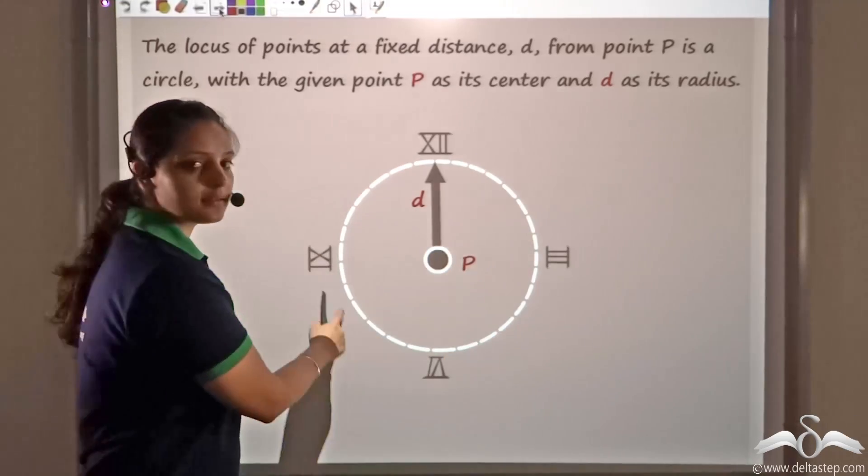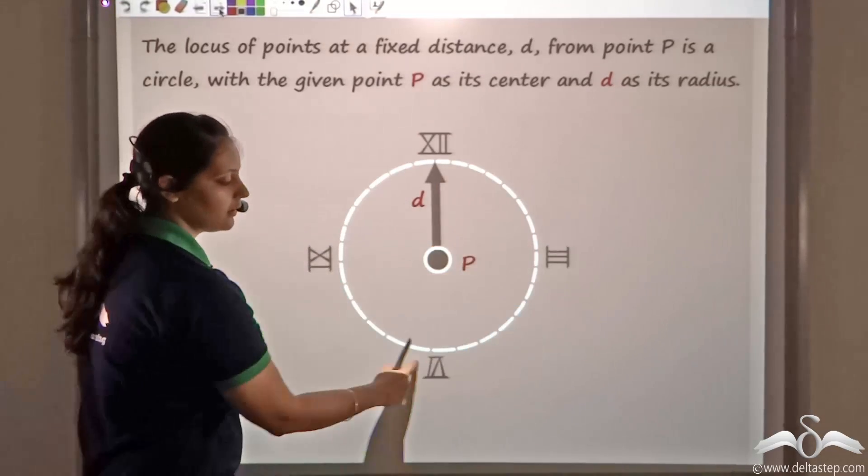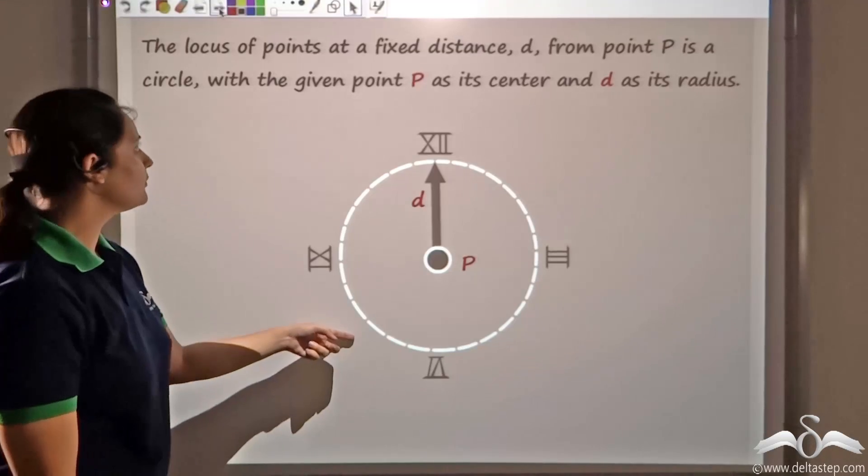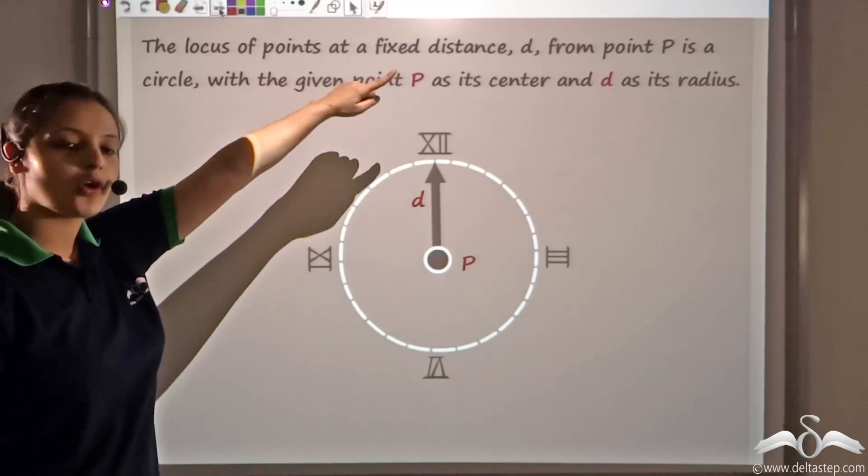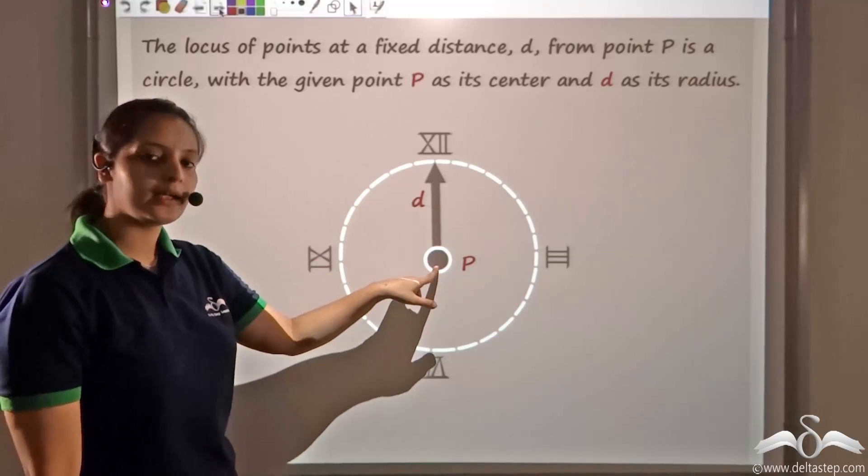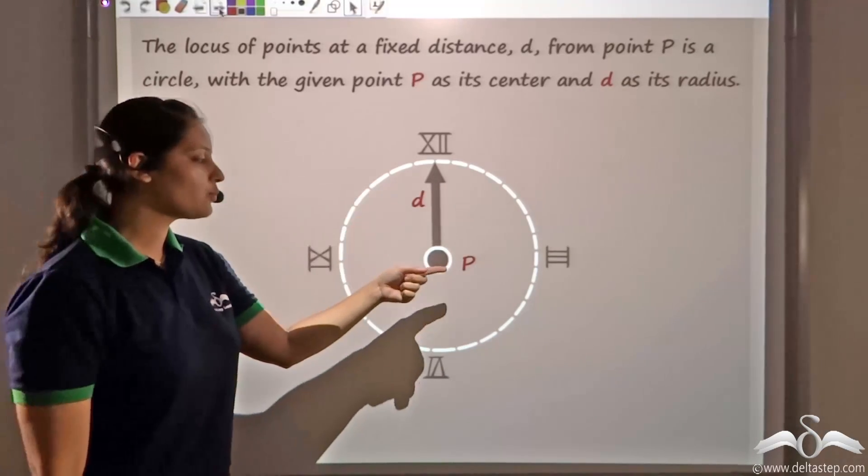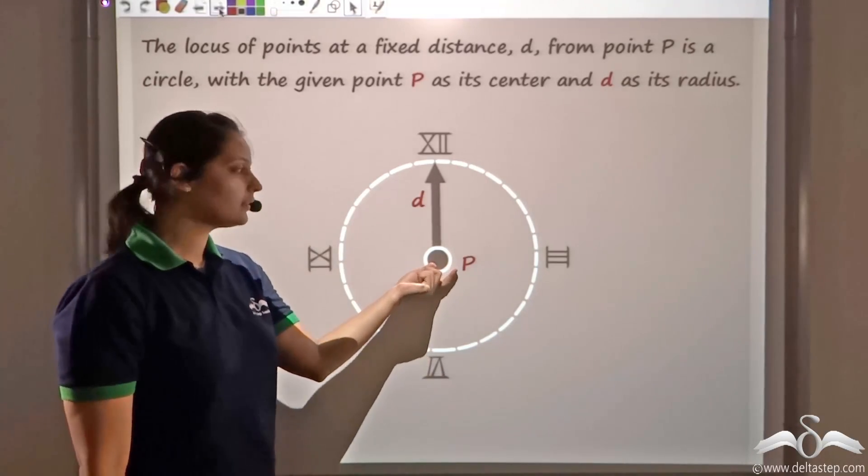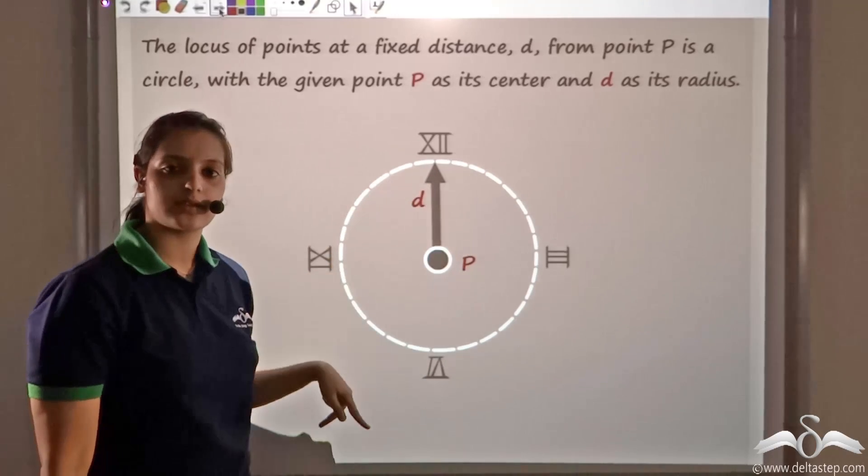And what is this locus? The locus gives me a circle. What I get is a circle in turn. That is, the locus of all points that are at a fixed distance away from a point is a circle, where this point P becomes the centre and D becomes the radius of the circle.